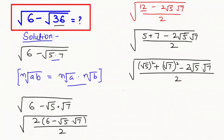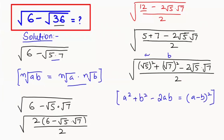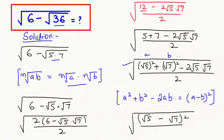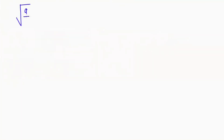Now I'm going to apply the algebraic identity that is a squared plus b squared minus 2ab is equal to a minus b whole to the power of 2. So this is our a value and b value. This equation turns to root of (root of 5 minus root of 7) whole to the power of 2, over 2.